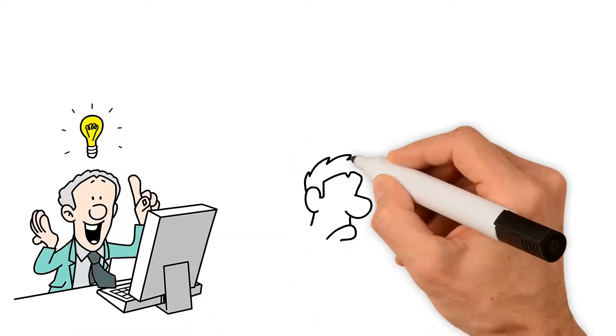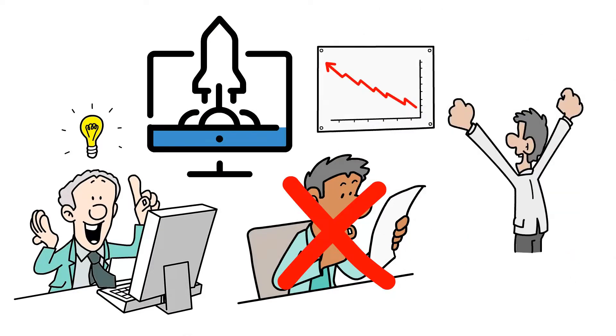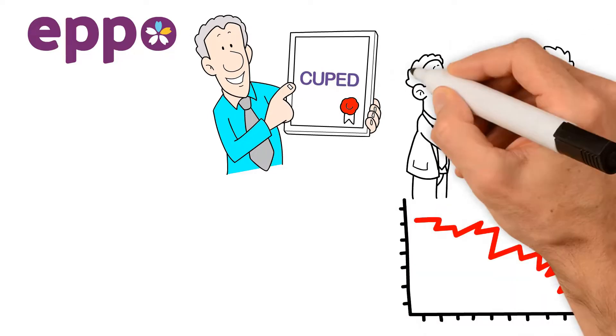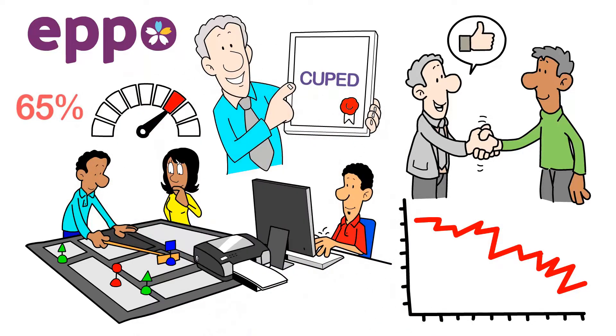Experimentation allows businesses to eliminate guesswork around feature launches and make better decisions. Eppo is the first commercial experimentation tool to offer CUPID Variance Reduction, which has allowed existing customers to conclude experiments up to 65% faster than before.